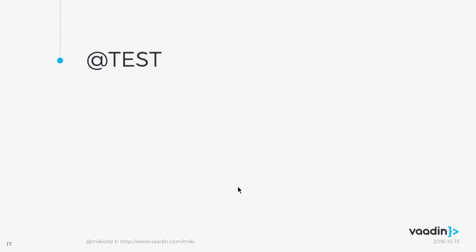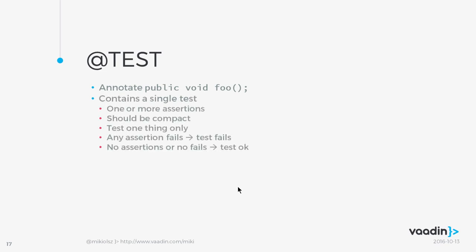The @Test annotation is the heart of JUnit — it's used on instance methods and contains a single test with one or more assertions. It should be compact and test one thing only — no workflows or anything like that. The name of the method should reflect what you're testing — self-documented tests, so by reading the test you know what's going on and what are the requirements. Tests are run in a random order, so never rely on a particular suite of tests running in a given order.